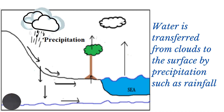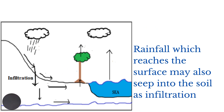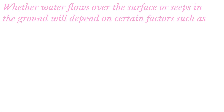snow or hail. Rainfall which reaches the surface may flow over the surface as overland flow. Water which reaches the surface may also seep into the ground as infiltration.